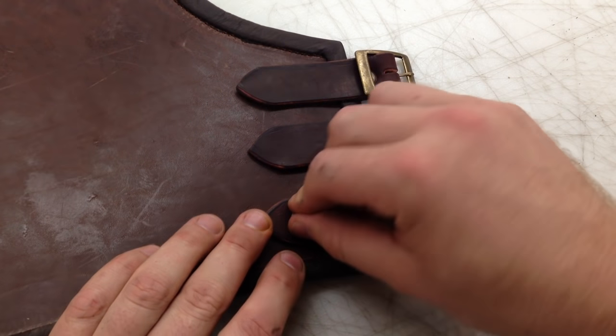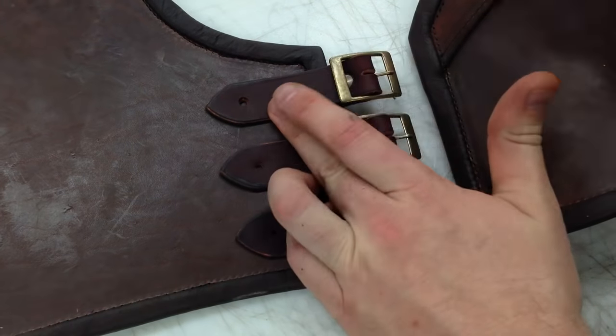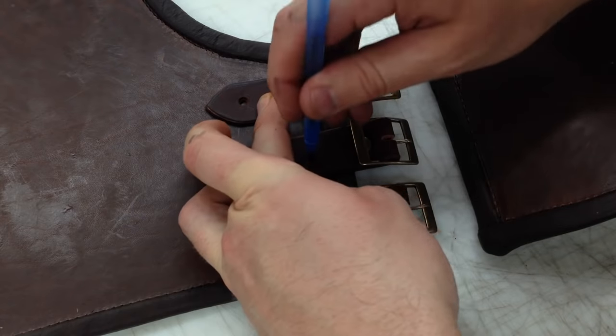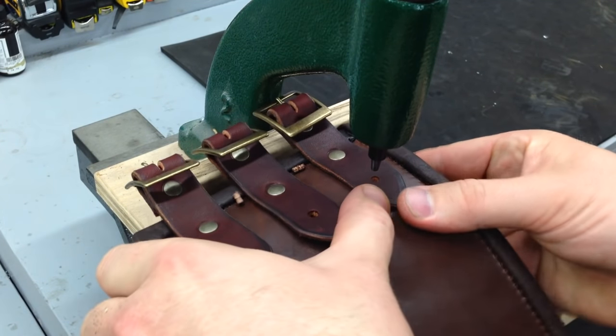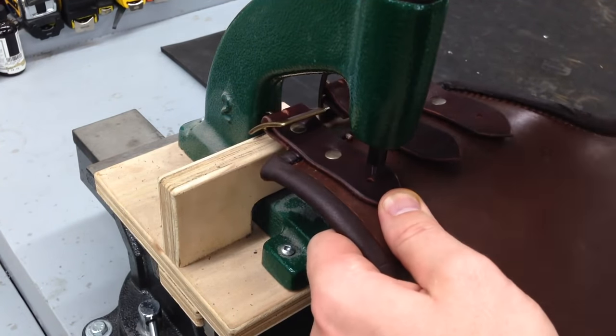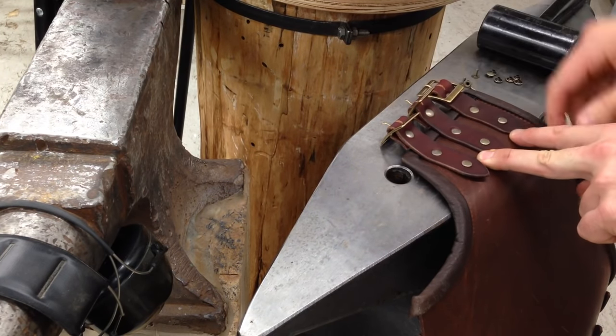This is a technique I use all the time. Basically I'm using the rivet itself to press an impression into the leather strap so I know where to punch my hole. Once I've got my holes punched, I'm going to punch them out and set one before I set the second one. That way I can ensure that those straps are dead even with each other.